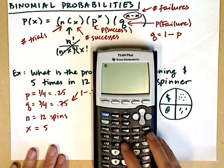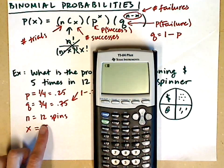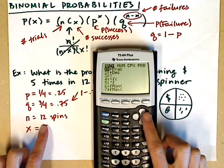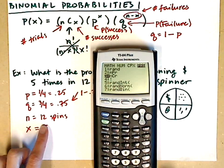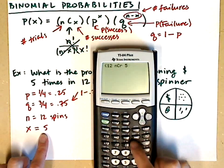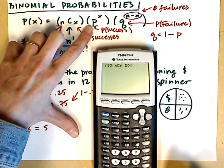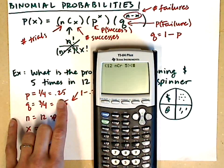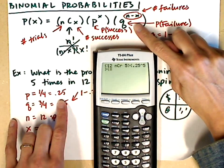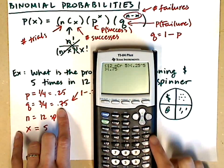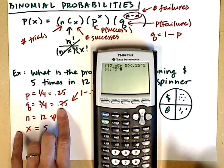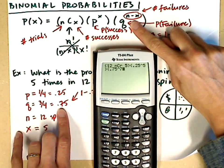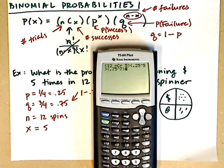I'll turn the calculator on and start with parentheses. I'll use the combination function: type n first, so it's 12. The combination is found in the Math menu, Probability submenu — arrow down to combination and hit Enter. So it's 12 choose 5, since we've got 5 successes. Close the parentheses. Now I need the probability of a success to the number of successes: 0.25 raised to the fifth power. Then open the next parenthesis for the probability of a failure: 0.75. I'll use the caret key for the power — it's raised to the number of failures. With five successes out of 12, that leaves seven failures, which is n minus x, or 12 minus 5.